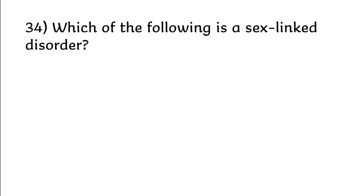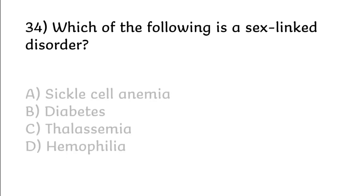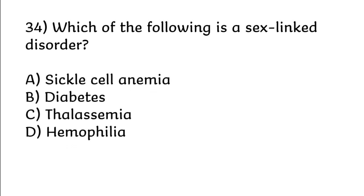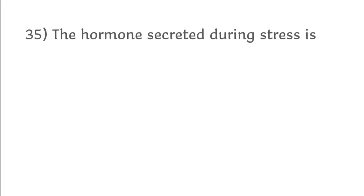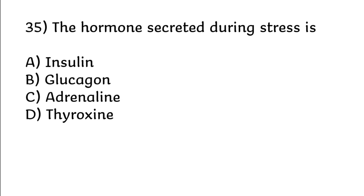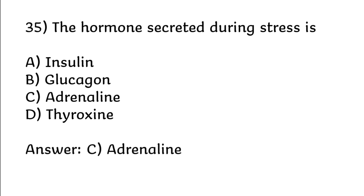Which of the following is a sex-linked disorder? Options: sickle cell anemia, diabetes, thalassemia, hemophilia. Correct answer is option D: hemophilia. The hormone secreted during stress is: insulin, glucagon, adrenaline, thyroxine. Correct answer is option C: adrenaline.